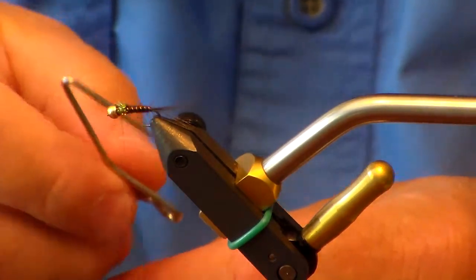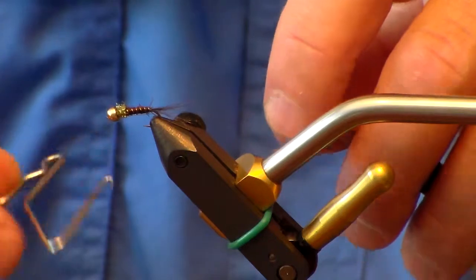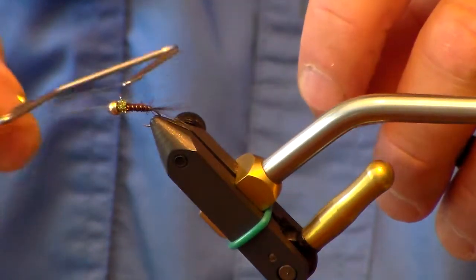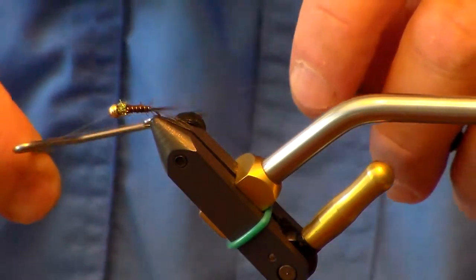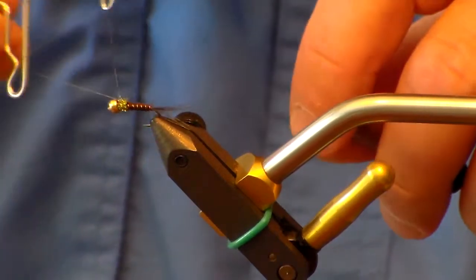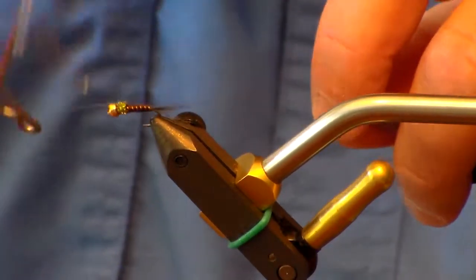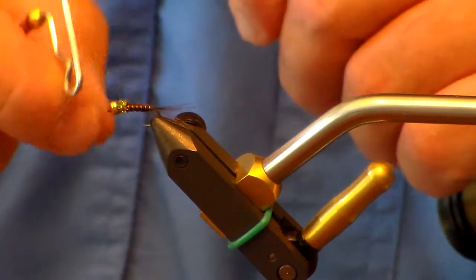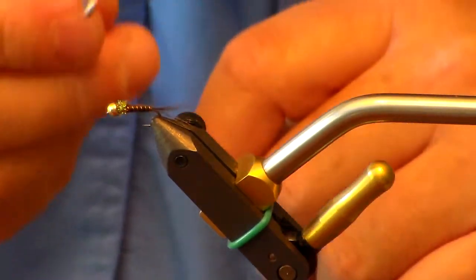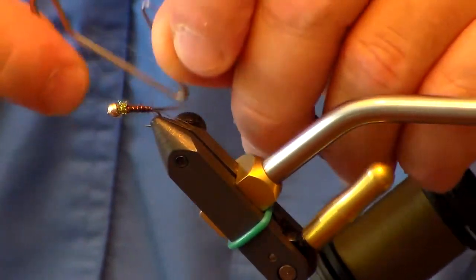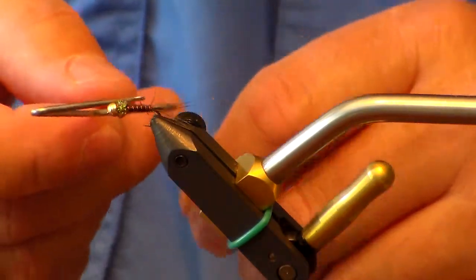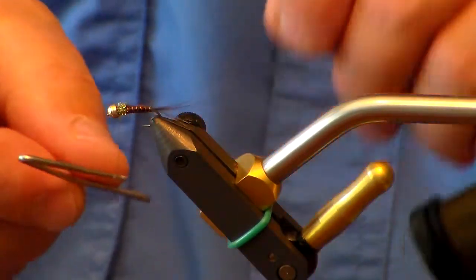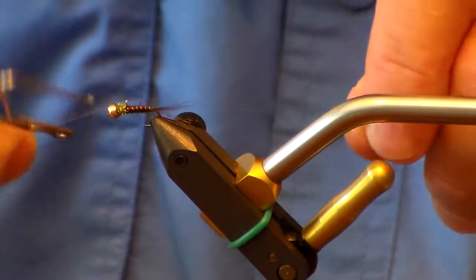Just take your whip finisher, do this four or five times. If you do this in the front, I like to do this twice. It's kind of hard to see with these magnifying glasses I've got on.